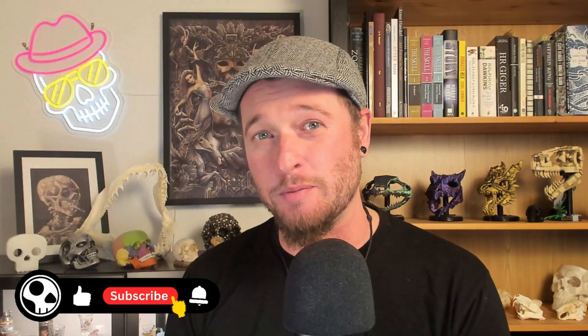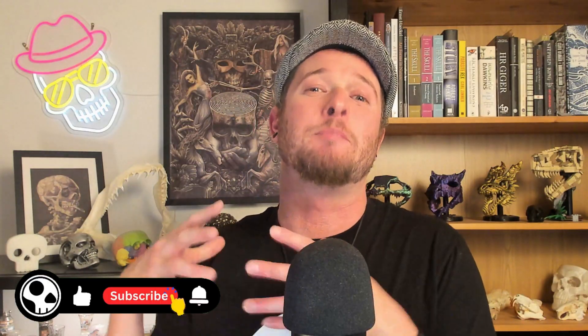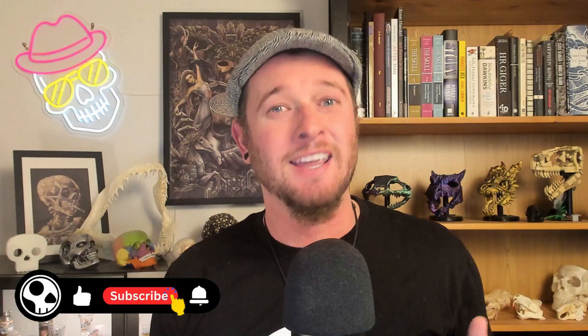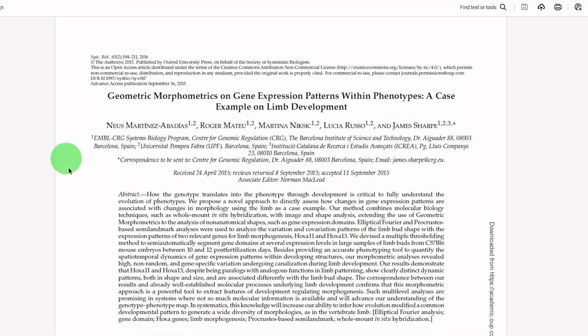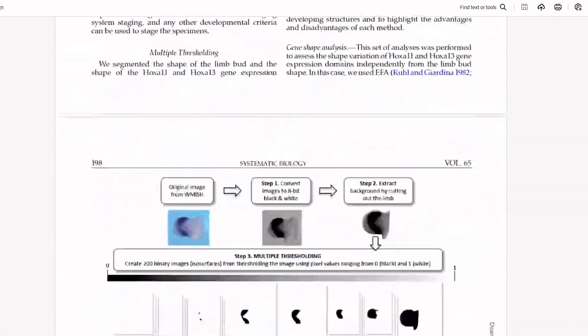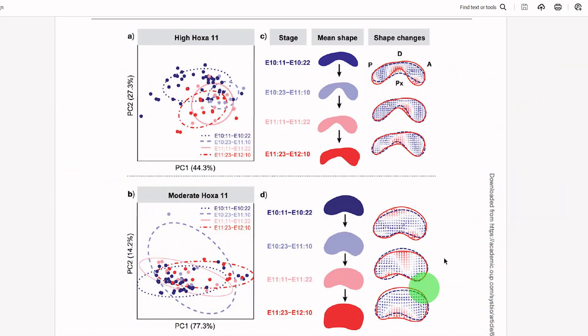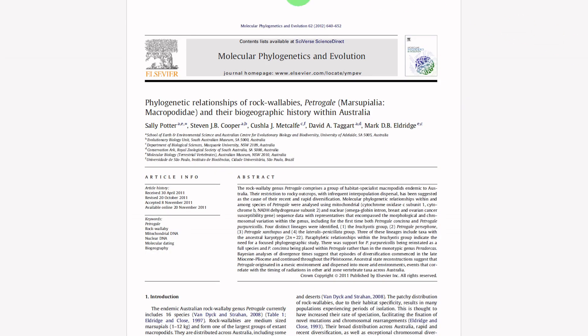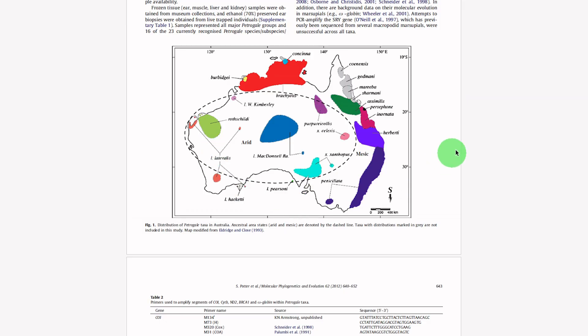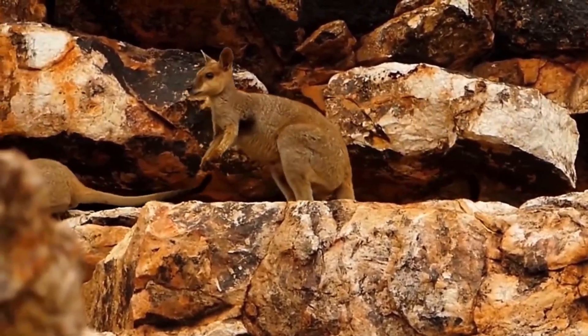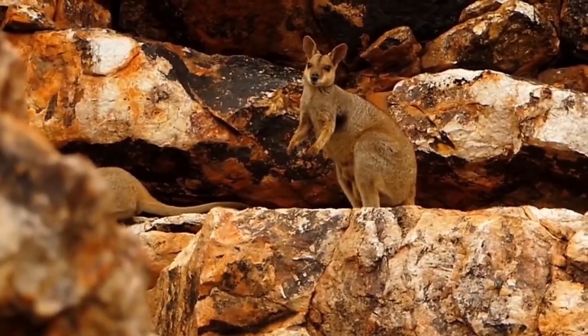Once we've done the Procrustes superimposition, what we're left with is pure shape data that's ready for analysis, and we can use this in tons of different ways — sometimes for biomechanical data to relate shape to function, or combined with genetic data to relate shape differences to specific genes. Now let's put this method into action using my dataset of nearly 400 wallaby skulls. The genus Petrogale has 17 species scattered across Australia, making them a perfect group for studying adaptations to climate differences, genetics, morphology, and a whole range of things.